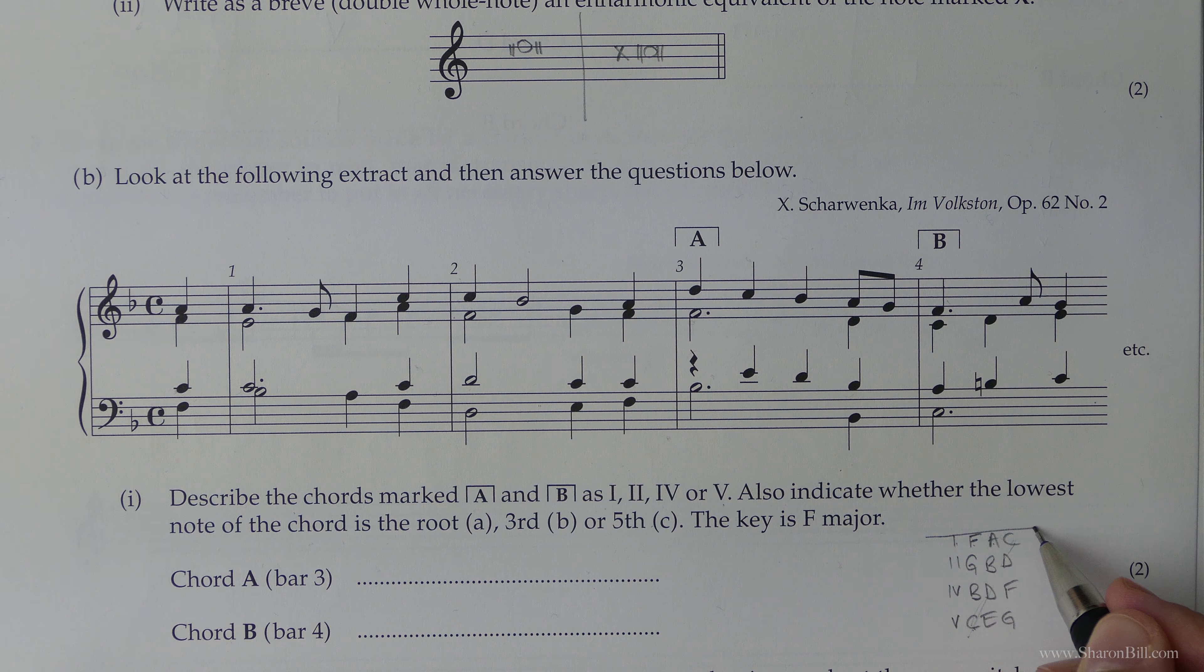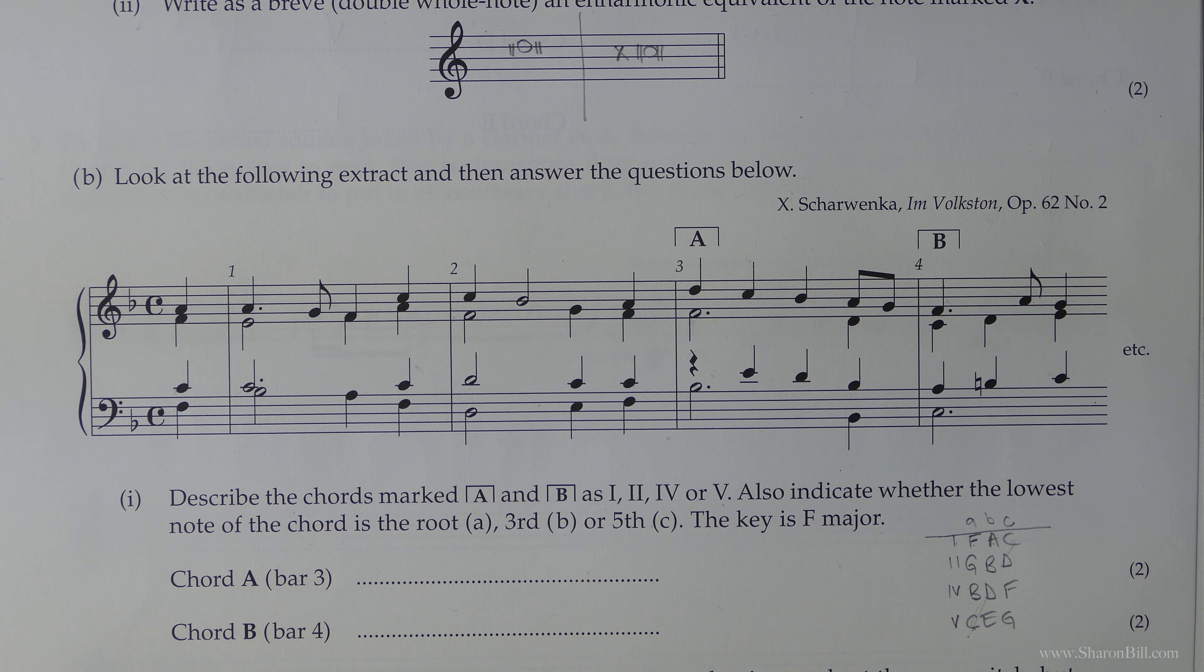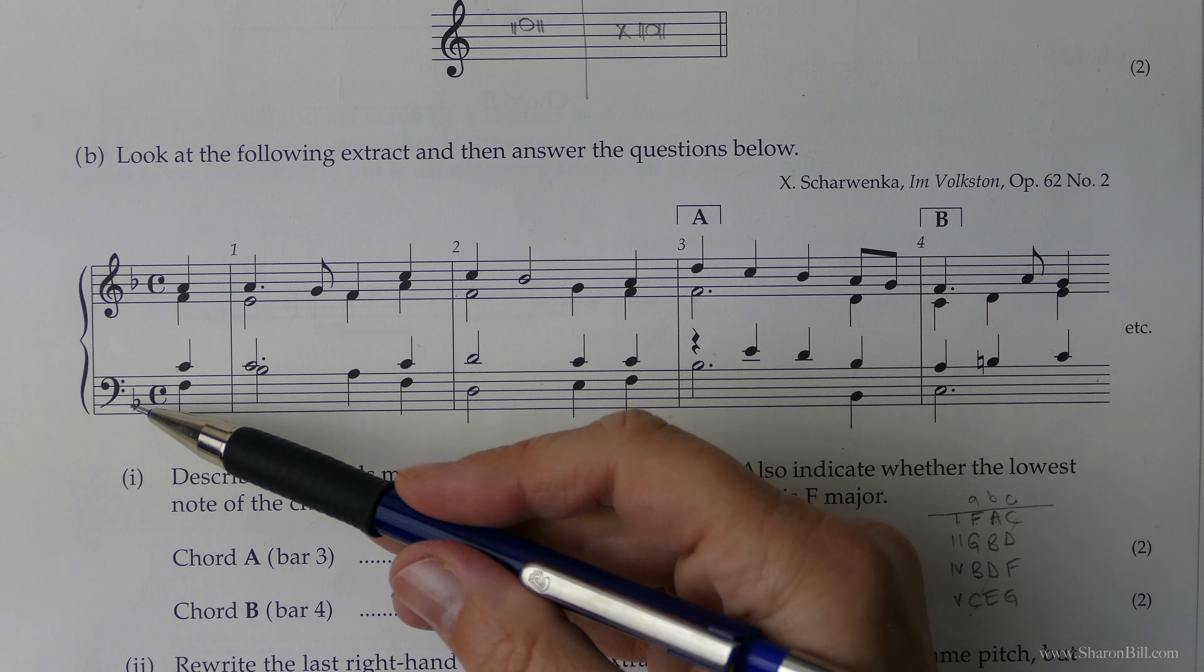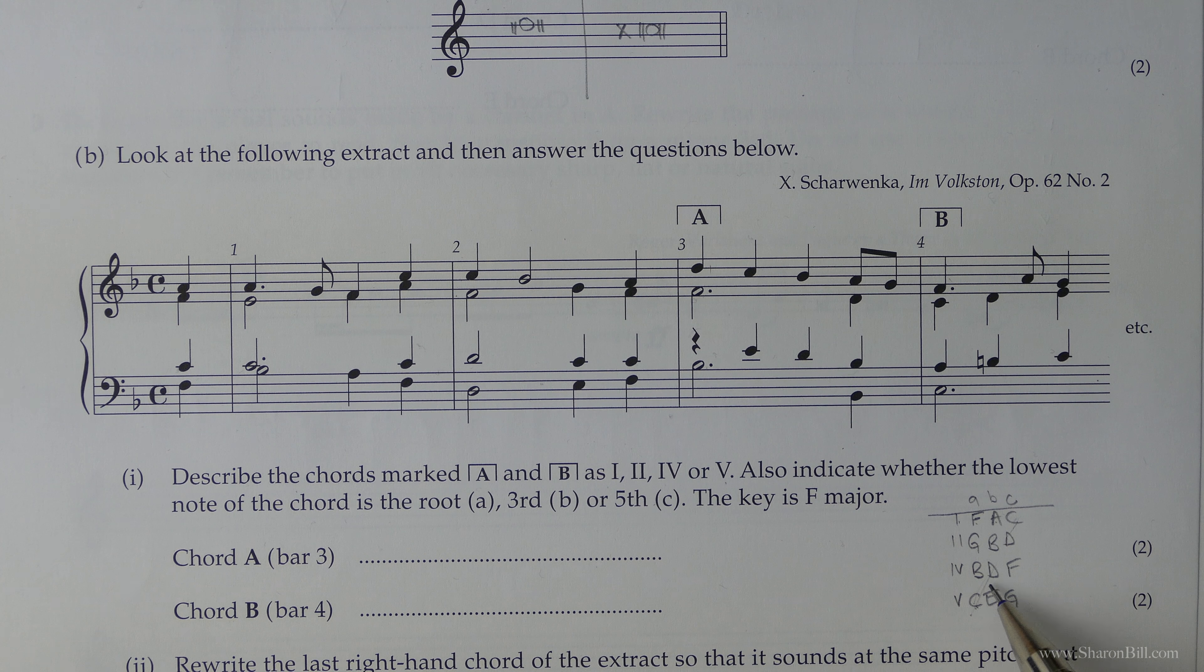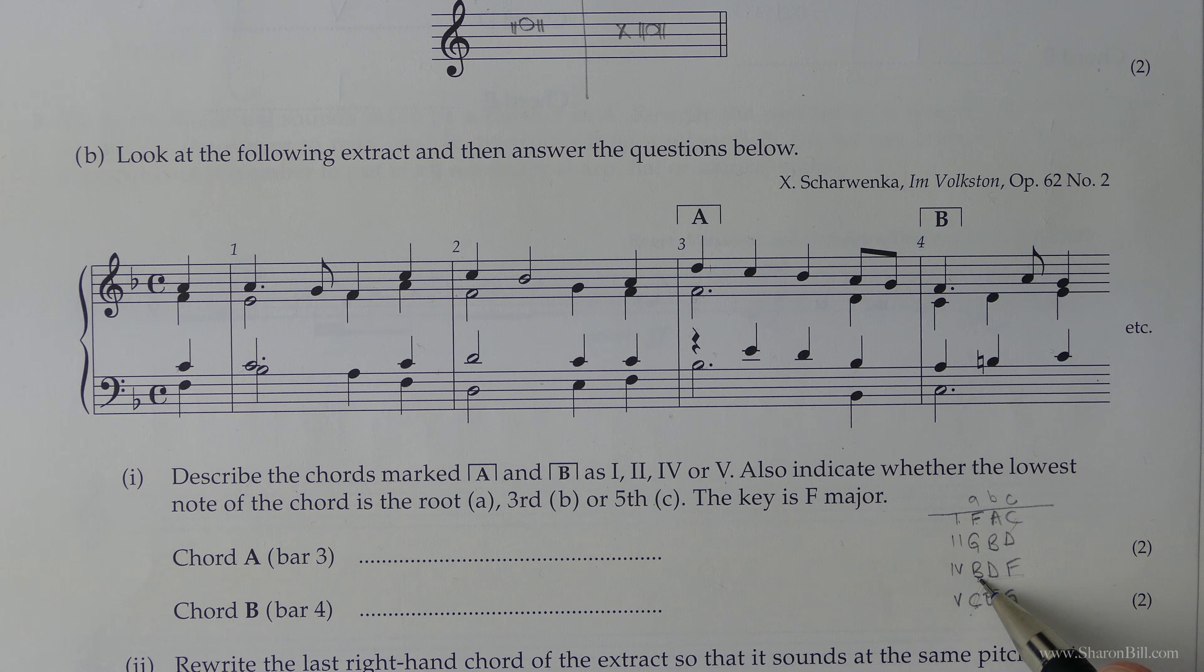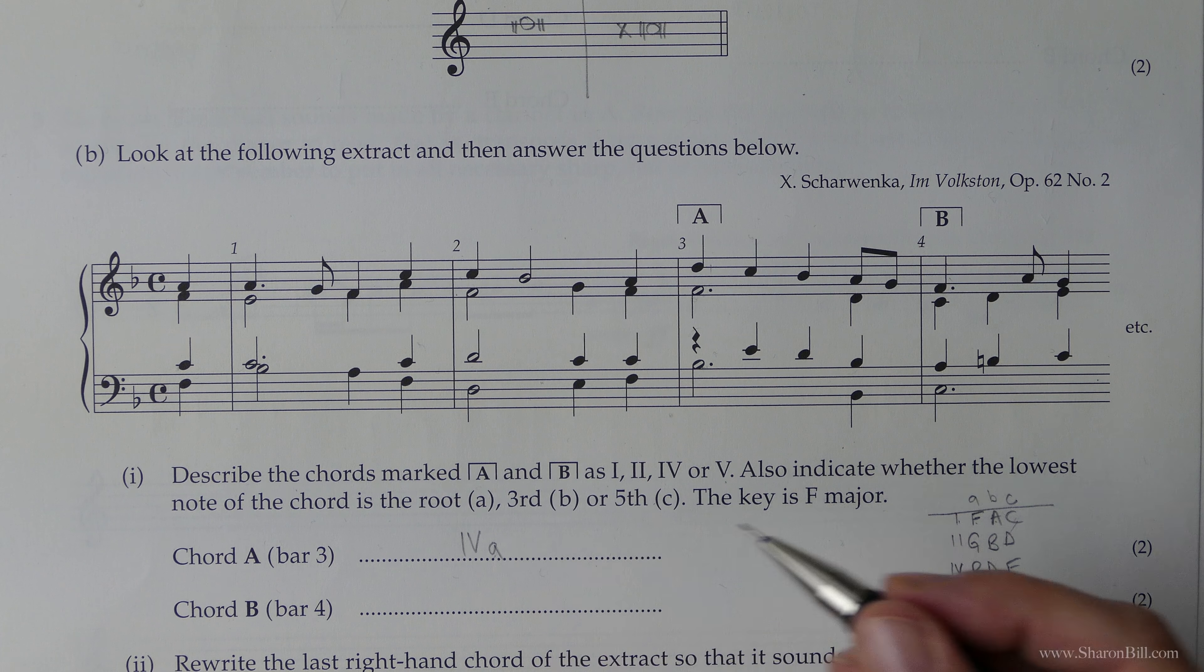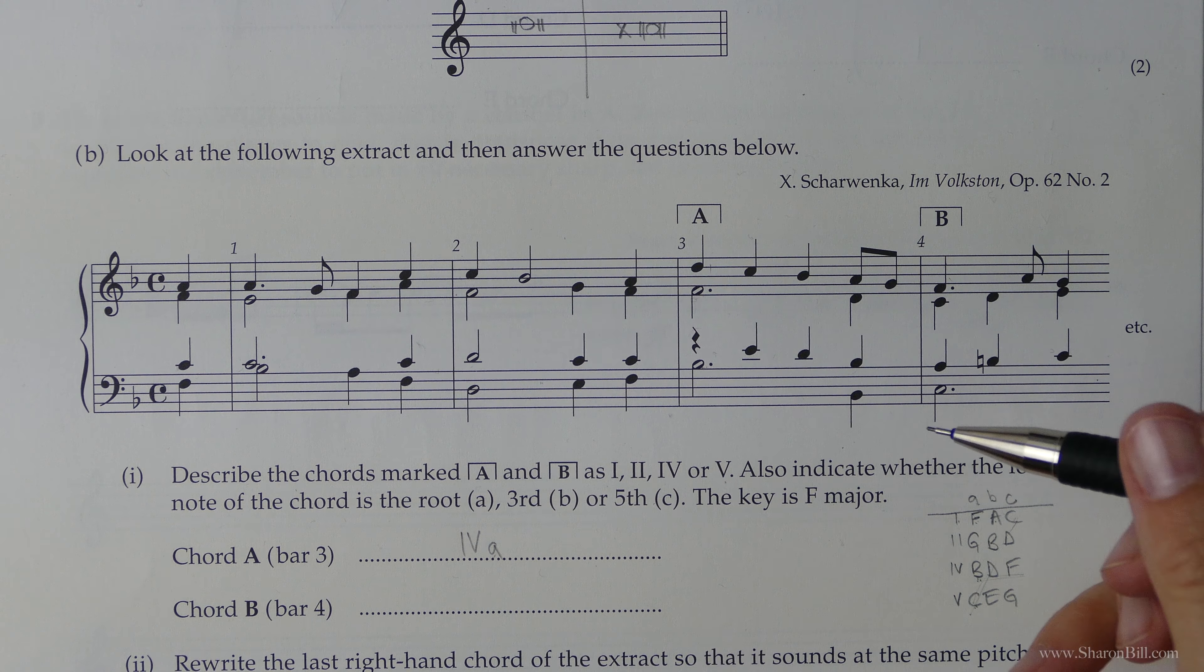And then we can also just prepare and think root position, first inversion, second inversion. So now we've got all the information we need and all the thinking's done. We've just got to choose what fits best. So here we have the bass clef and treble clef, a B, an F, and a D. So that's going to be chord IV, which has got B, D, F. And because the B is in the bass, we're in root position. So chord IVA. Just four on its own also means root position, but you might as well pop the A in just to be super clear about the fact that you know what you're doing there.